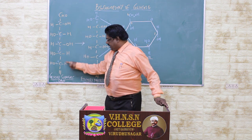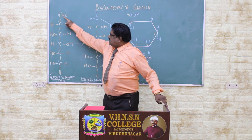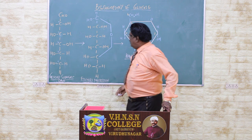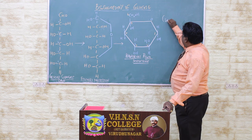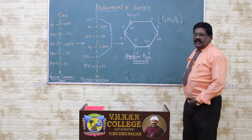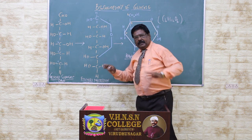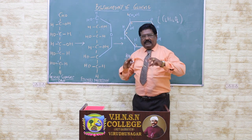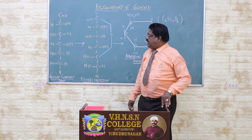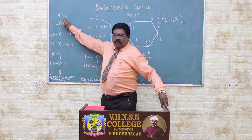Fischer's open chain structure explains the straight chain structure of glucose, having 6 carbons, 12 hydrogens, and 6 oxygens with the empirical formula C6H12O6. This glucose molecule structure was proposed by Fischer, who projected this structure and gave a projection formula to create a ring structure.